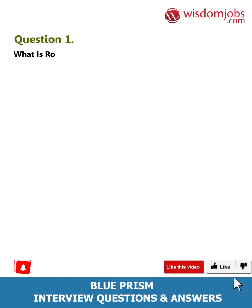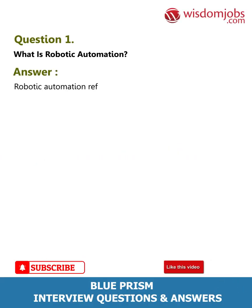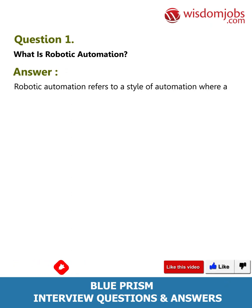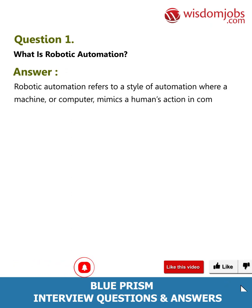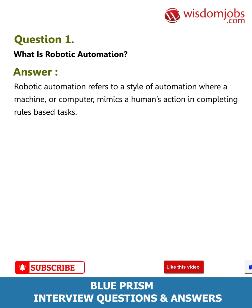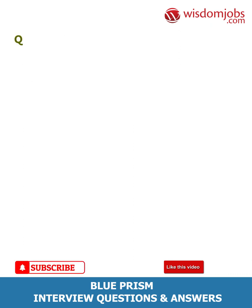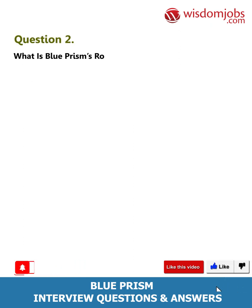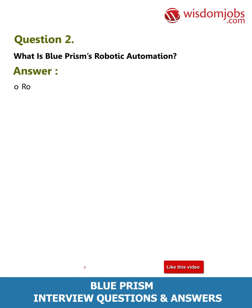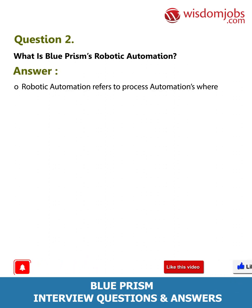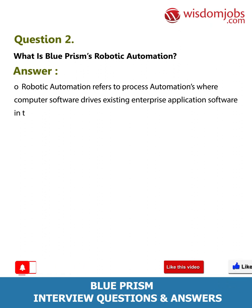Question 1: What is robotic automation? Answer: Robotic automation refers to a style of automation where a machine or computer mimics a human's action in completing rules-based tasks. Question 2: What is Blue Prism's robotic automation? Answer: Robotic automation refers to process automations where computer software drives existing enterprise application software in the same way that a user does.